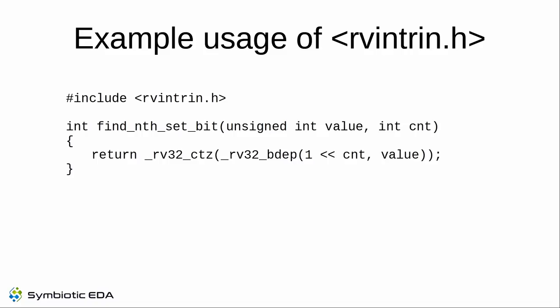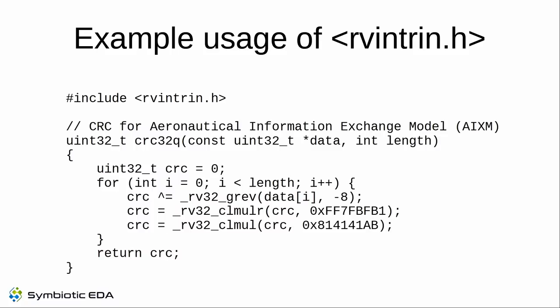Using the header, you include it and get functions like _rv32_ or _rv64_ variants — there's also an rv without a number that operates on the long type. For example, a function takes a count argument and finds the indicated set bit — say, the fifth set bit in a word — returning its index. As a usage example: a CRC with a non-standard polynomial can be implemented using carryless multiply, followed by a Barrett reduction using two carryless multiplies — more efficient than the lookup table approach.